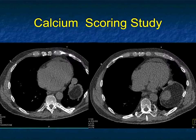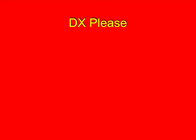This was a calcium scoring study, and we see what looks like multiple masses on the diaphragm, a mass posteriorly on the pleura, and a mass underneath the diaphragm. You can think about lung cancer implants, lymphoma — but when I got old scans, the patient had a prior splenectomy, and these were splenules, or splenosis. Post-trauma splenosis typically occurs in the splenic bed but can occur anywhere in the abdomen, on the diaphragm, or even in the lungs — we've all seen quiz cases of splenosis presenting as a solitary lung nodule.